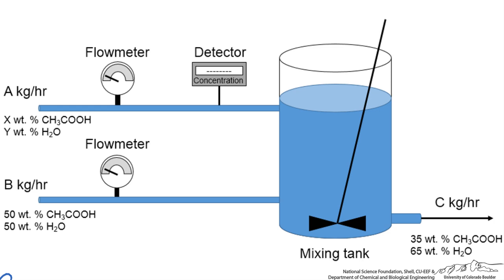If you look at our process we put in some flow meters and a detector into our stream lines. Based on these flow meter readings and the concentration reading we get for stream A, we could come up with some relationship to dictate how we should control stream B to meet the desired specifications.